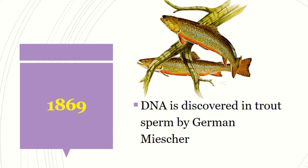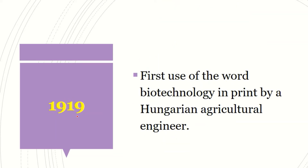After that, we started discovering DNA. Friedrich Miescher was able to discover DNA in trout sperm. In the sperm of this fish, he discovered that there is genetic material called DNA, in 1869. And then we were able to formally define biotechnology — in 1919, the word biotechnology was first printed by a Hungarian agricultural engineer.